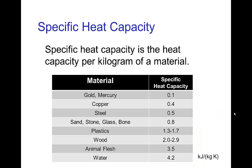Different materials have different heat capacities, and we measure this as the specific heat capacity — that's the heat capacity per kilogram of material. The lowest heat capacities are with metals like gold, copper, and steel. Intermediate values are things like sand, stone, glass, bone, and plastics. The highest specific heat capacities would be flesh, because it has a lot of water, and then water itself has a very high specific heat capacity.